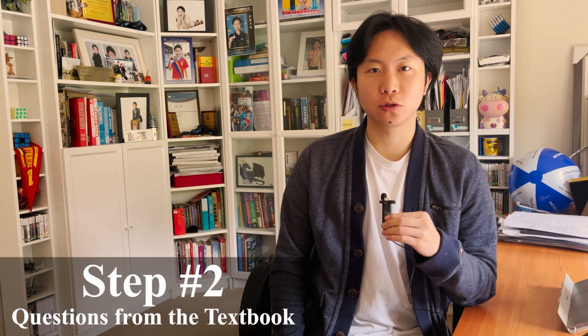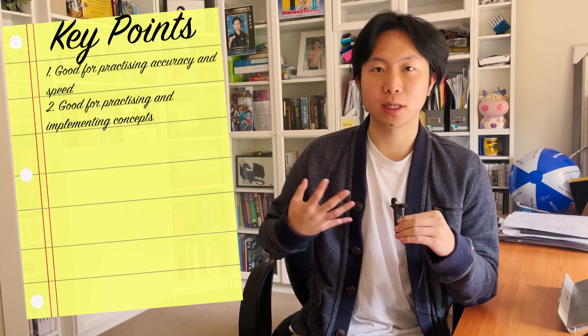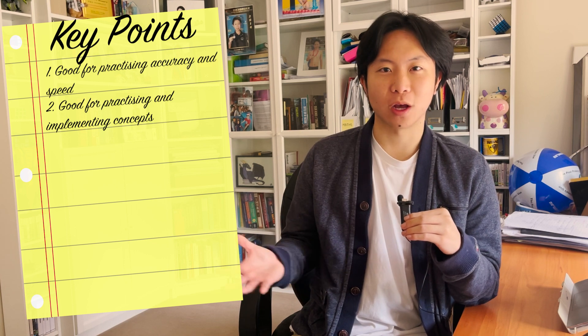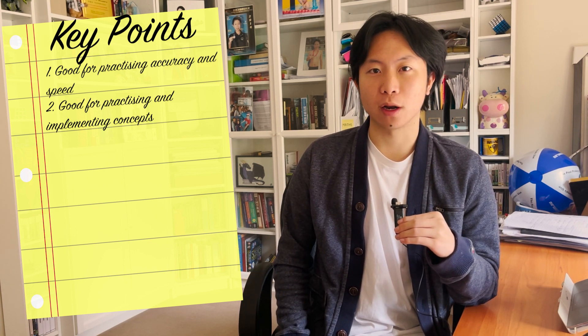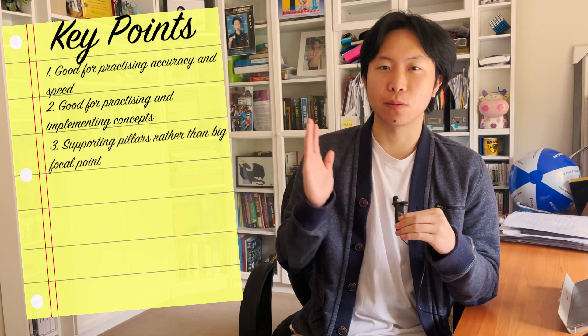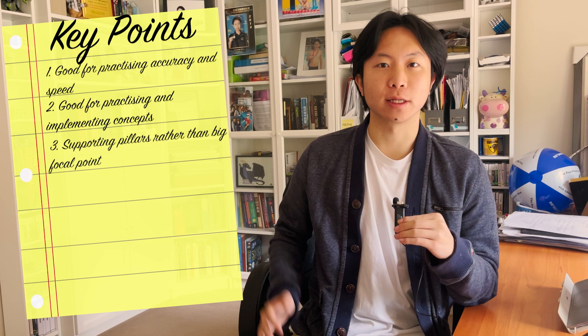The second part of the process is to do questions from the textbook. Textbook questions are really good for practicing your accuracy and also your speed, because these questions are quite repetitive — they get you to find derivatives of many types of expressions and tangents at various types of graphs. They're really good for practicing and implementing the concepts you've just learned. In maths, they generally don't just ask you to find the derivative — usually you have to find it as part of your working out for a broader question, so these questions are like the supporting pillars — skills you should be able to do as second nature.